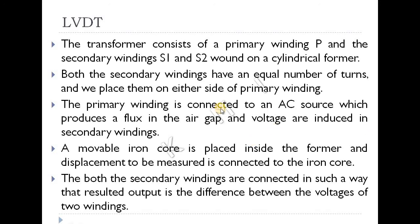The primary winding is connected to an AC source, which is why it is called a passive transducer requiring an external source. The alternating current in the primary windings produces a flux in the air gap, inducing voltage in the secondary windings.